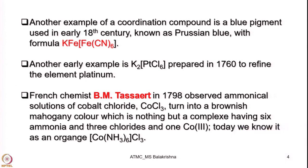Another example of a coordination compound is the well-known blue pigment used in the early 18th century known as Prussian blue, with the formula KFe[Fe(CN)₆] shown here. In fact it has an interesting structure I shall show you at a later stage.